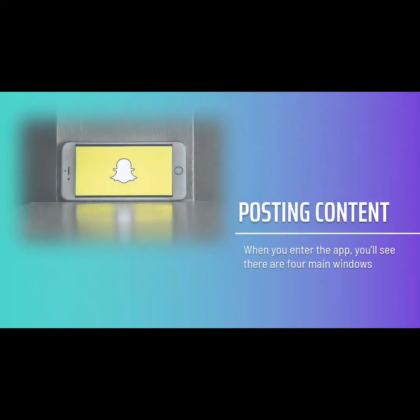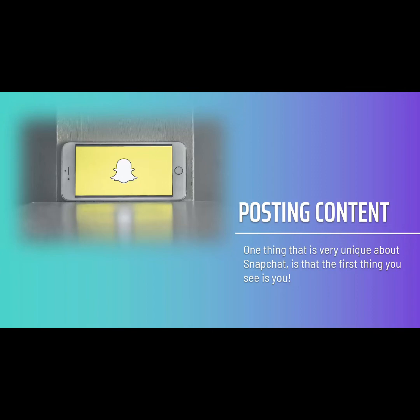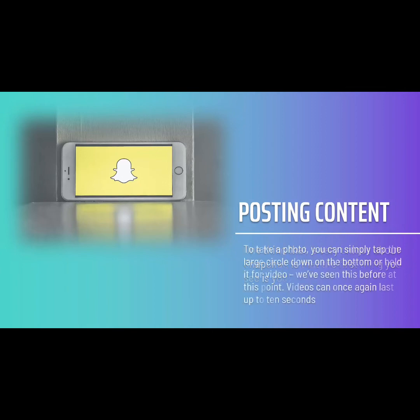When you enter the Snapchat app, you'll see there are four main windows: Camera, Discover, Friends, and Snap Map. One thing very unique about Snapchat is that the first thing you see is the camera, making it easy to start posting right away. Swiping across the screen is how you navigate between windows. To take a photo, simply tap the large circle at the bottom, or hold it for video. Videos can last up to 10 seconds. There's also the option to upload from your gallery, which is always a good option if you want to increase the quality of your content.